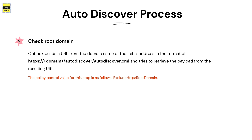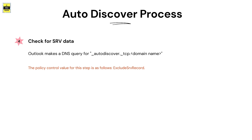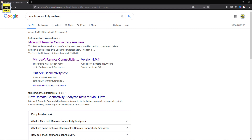If SCP returns an Auto Discover XML file, Outlook configures with that; otherwise it tries the next step, controllable via the 'Exclude SCP Lookup' policy. In step five, Auto Discover builds a URL using your fully qualified domain name slash autodiscover slash autodiscover.xml to retrieve the payload. If you configured it as autodiscover.yourdomain.com, you won't get a response in step five. In step six, Outlook checks autodiscover.domain.com followed by the autodiscover directory — controllable via the 'Exclude HTTPS Root Domain' policy. Outlook also checks for SRV records in DNS, controllable via the 'Exclude SRV Record' policy.